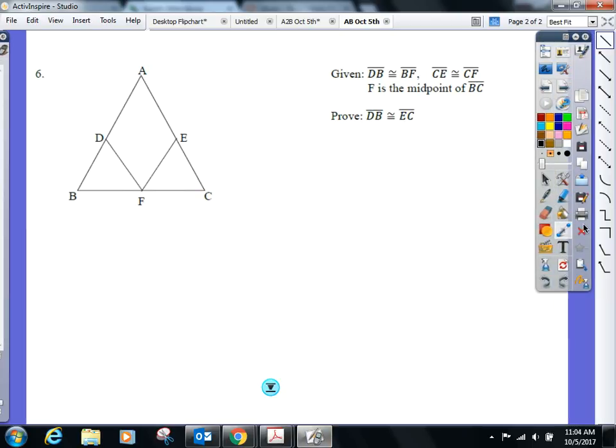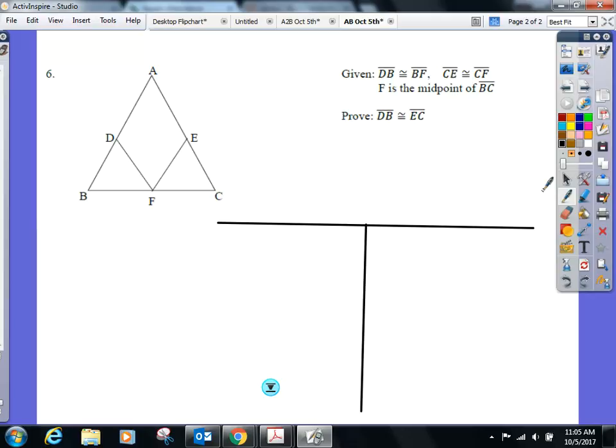Here we go. Take a look at number six. We were given, and I want to do this one just so we can practice for tomorrow. You're going to have four proofs tomorrow, five points each. That's half the test, four proofs, five points each.